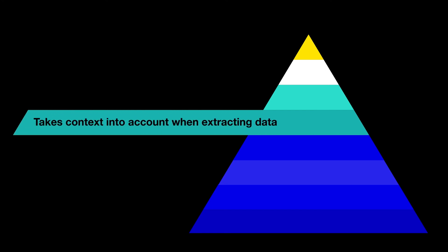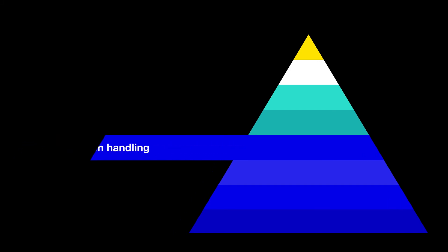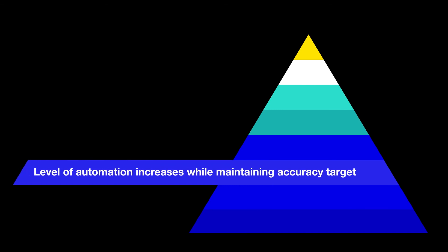Unlike other solutions, Hyperscience takes context into account when extracting data and reduces the amount of exception handling. As the platform processes more and more documents, the level of automation increases while maintaining that accuracy target, requiring less exception handling from human employees.